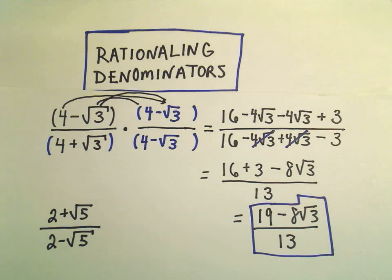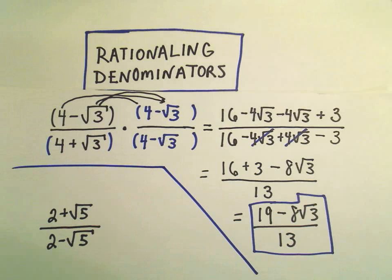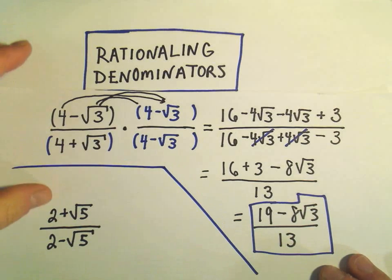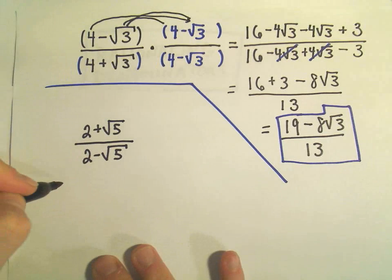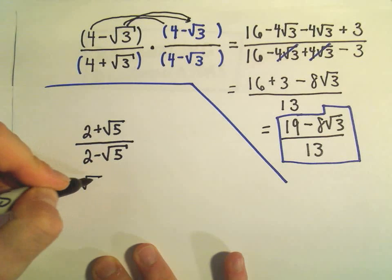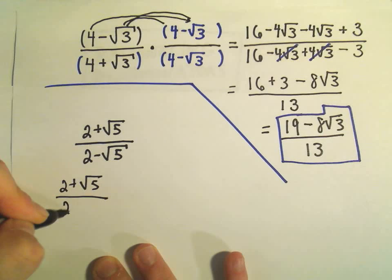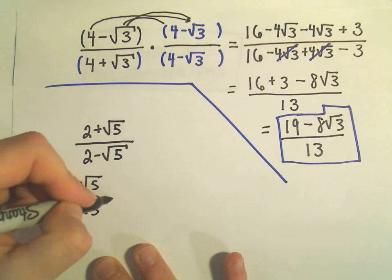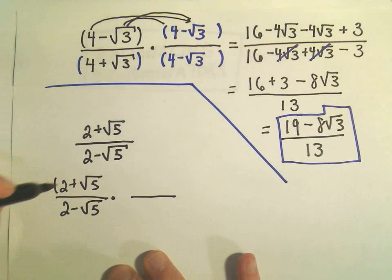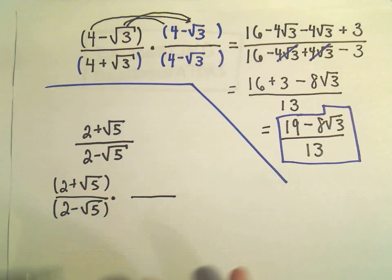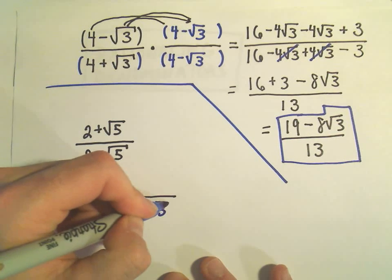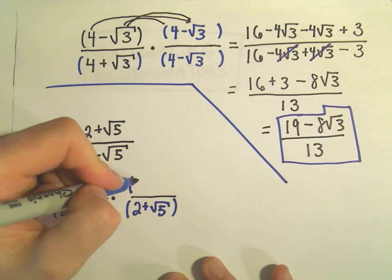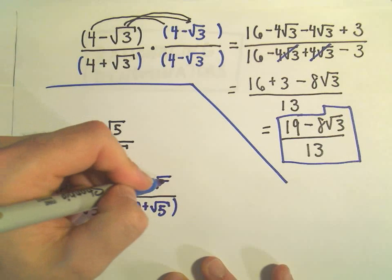So in our next one here, we have 2 plus root 5 divided by 2 minus the square root of 5. So I'm just going to do the same thing. I multiply by the conjugate of the denominator. So in this case, the conjugate of the denominator would be 2 plus the square root of 5.